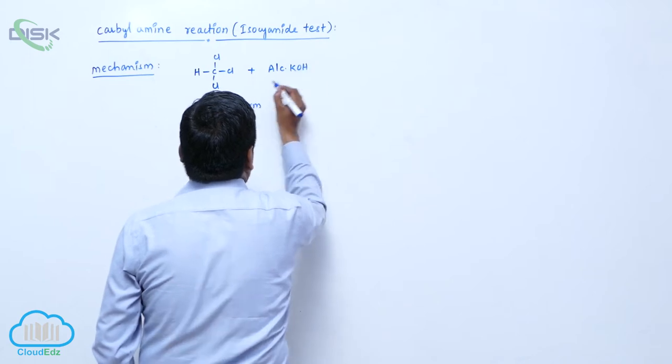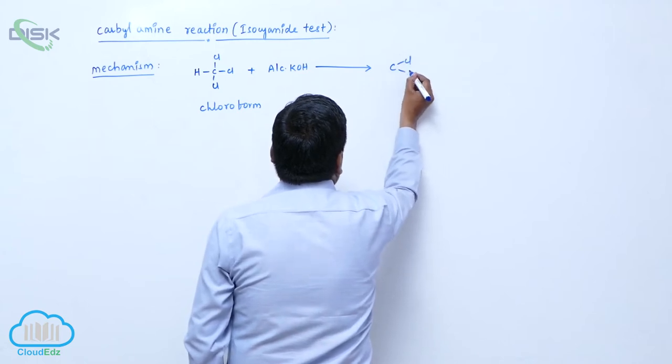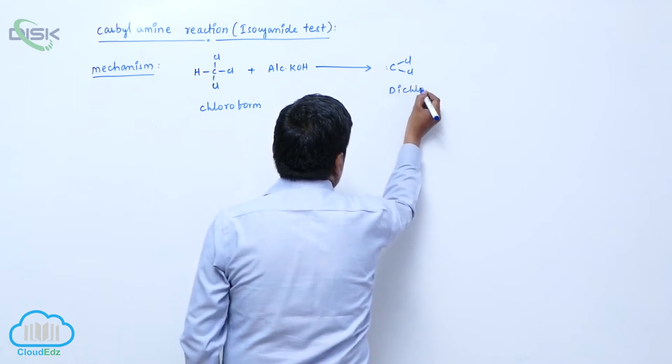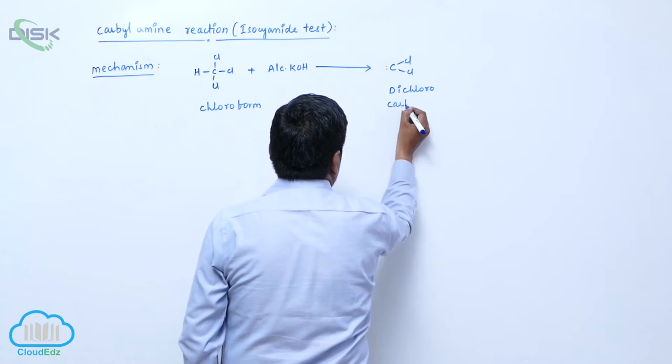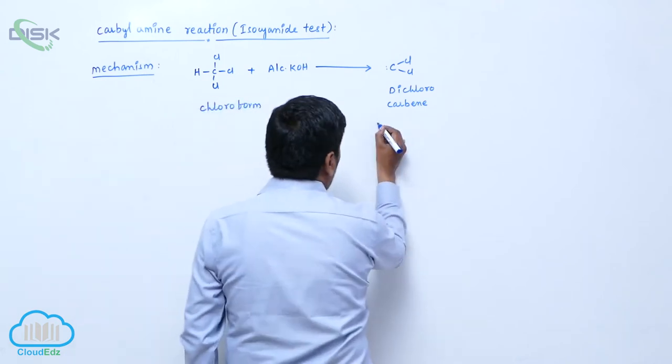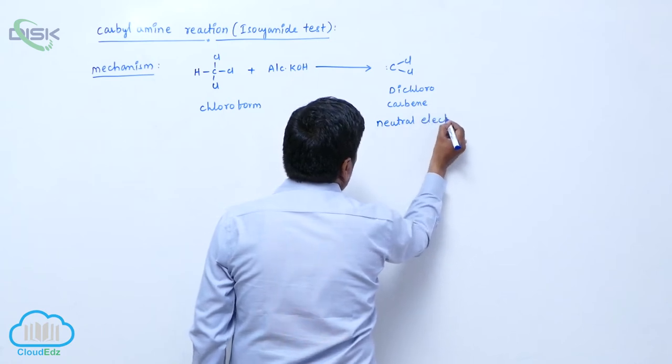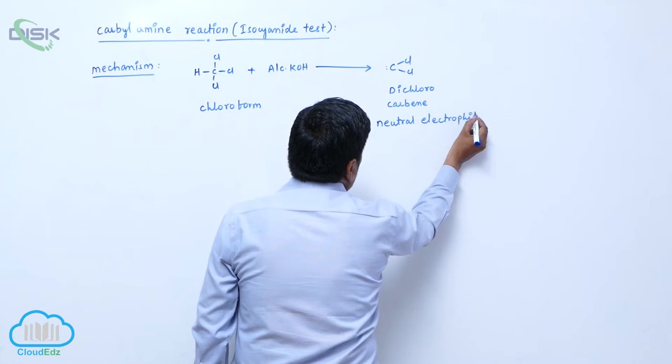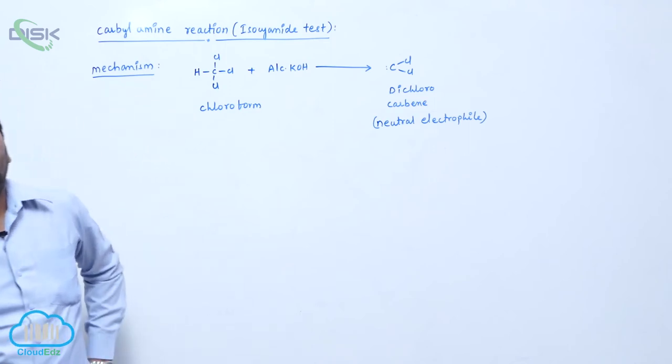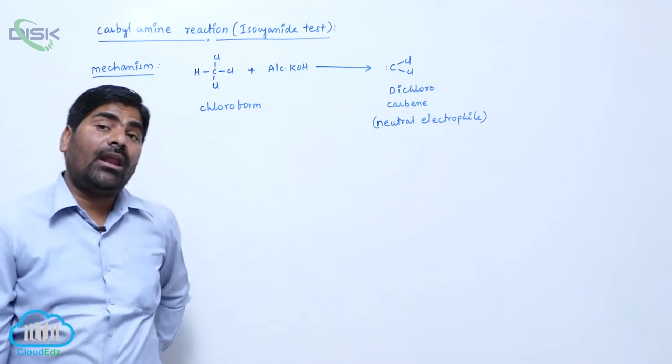Alcoholic potassium hydroxide forms dichloro-carbene, a neutral electrophile involved in carbylamine reaction. You have to remember, dichloro-carbene is a neutral electrophile mainly involved in Reimer-Tiemann reaction and carbylamine reaction.